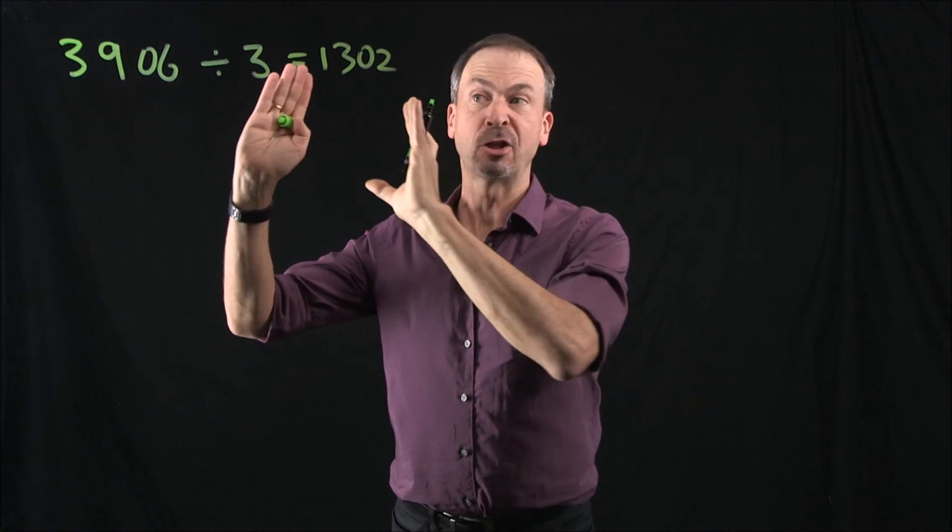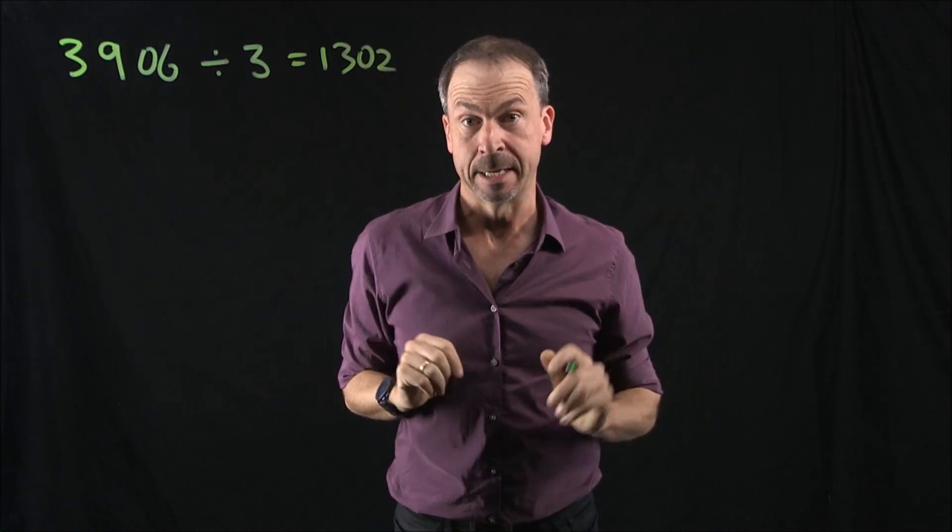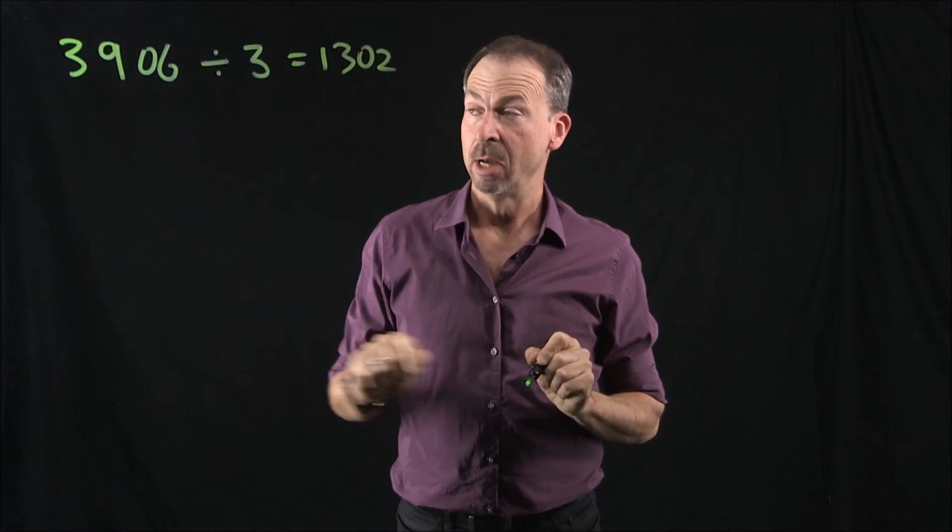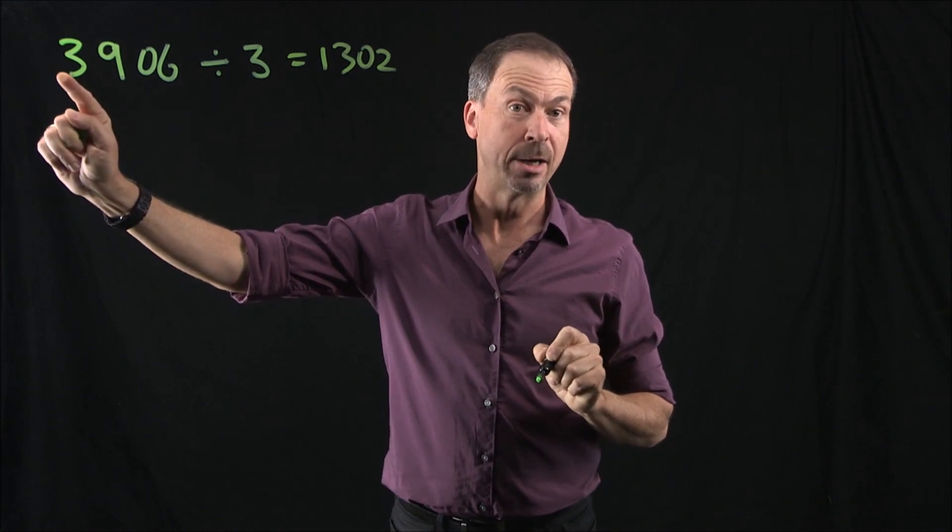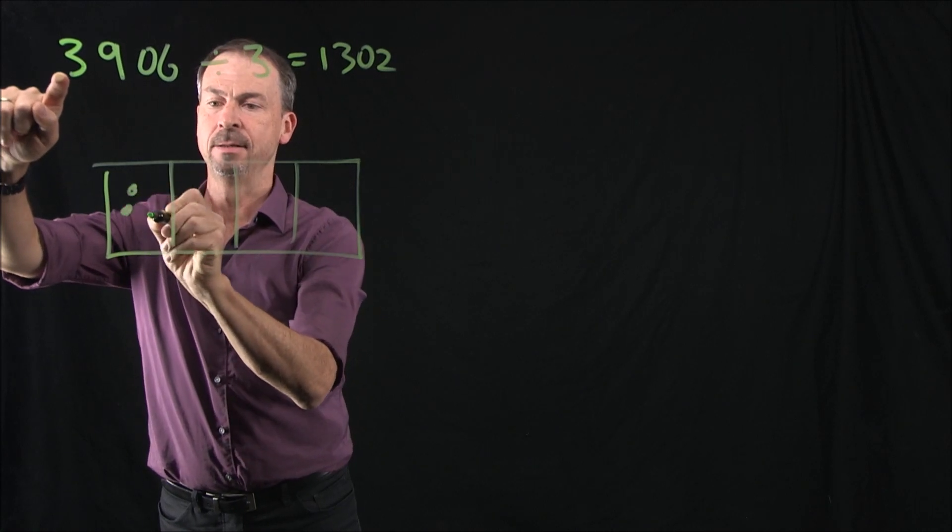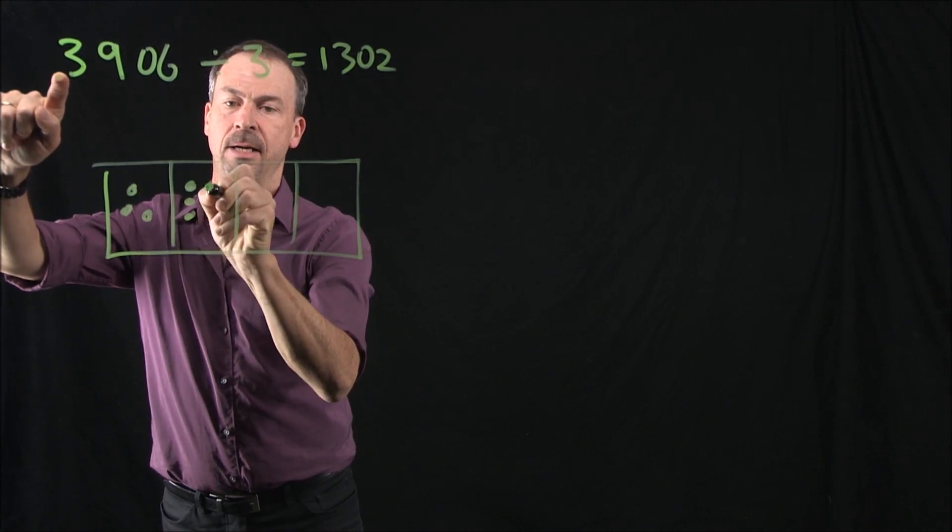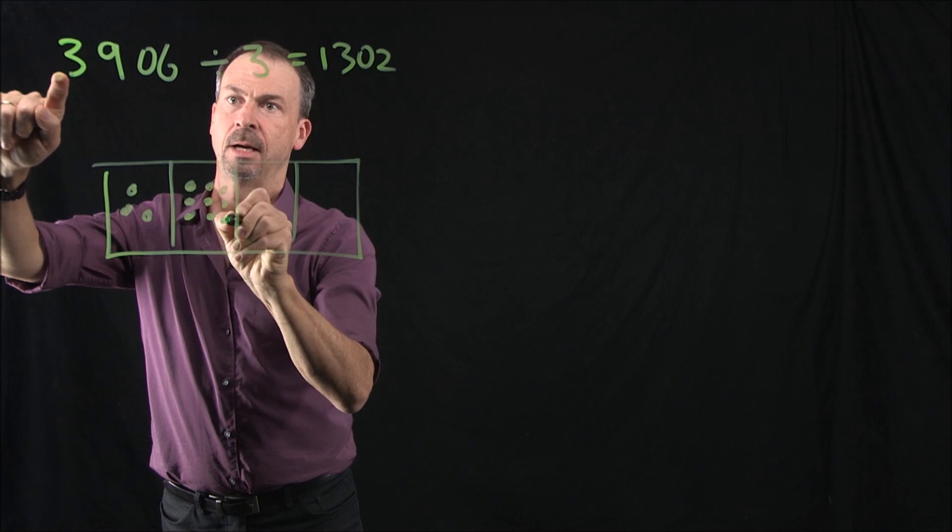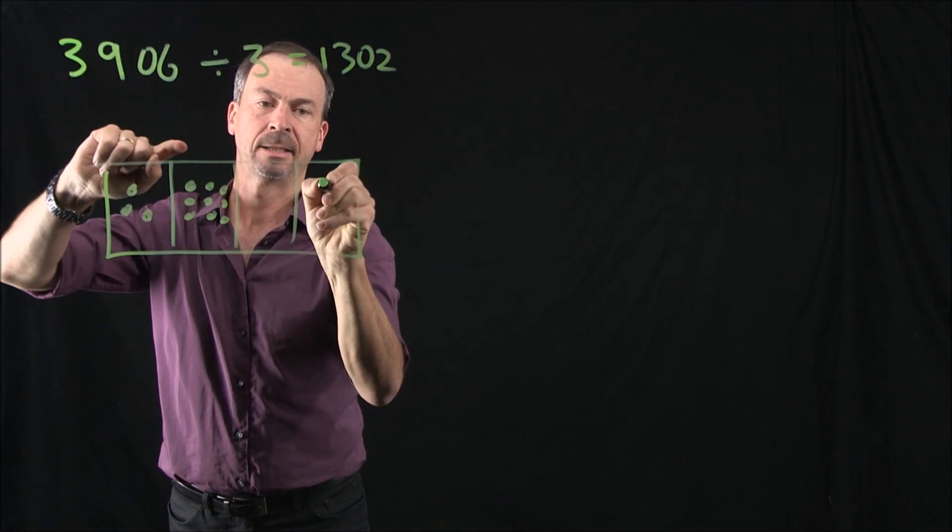But I want to illustrate how we can actually see that answer, and I mean literally see that answer in a 10-1 machine. So what I'm going to do is draw a picture of 3,906 in a 10-1 machine. It would be 3 thousands, no hundreds, nine tens, and six ones.